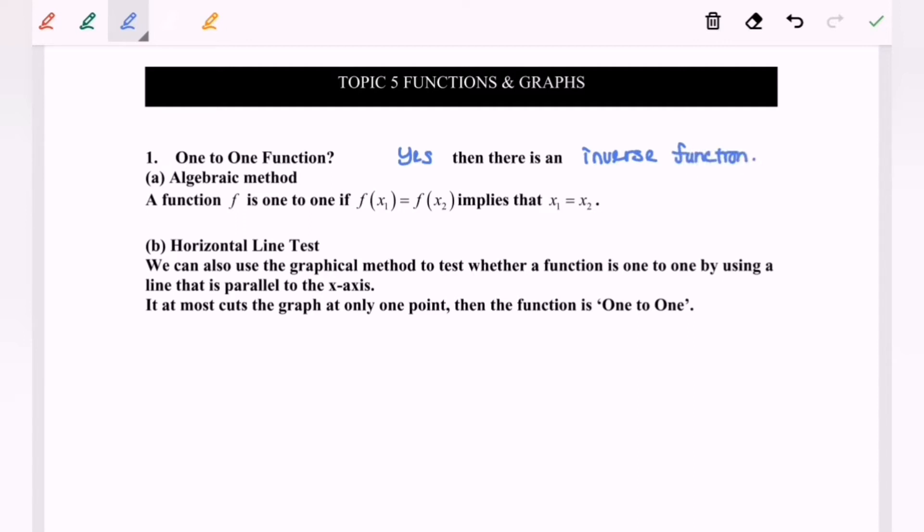There are two methods to determine whether the function is one-to-one or not. A, algebraic methods. A function f is said to be one-to-one if f(x₁) equals f(x₂), and it implies that x₁ equals x₂.